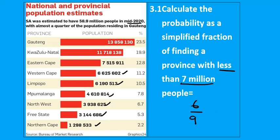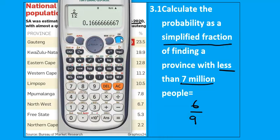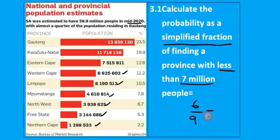We are asked to write this probability as a simplified fraction. You go to your calculator and type six over nine. Press equals and the calculator will simplify it for you. The calculator simplifies this to two over three, and that is your solution.